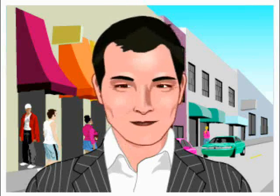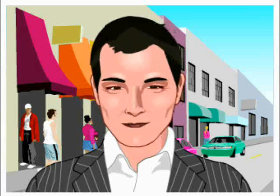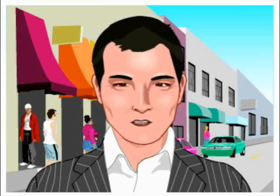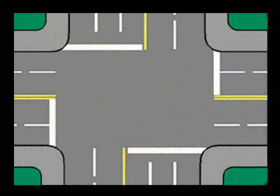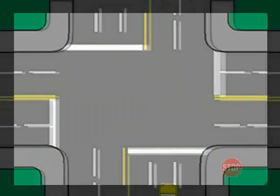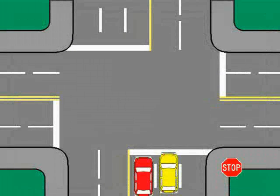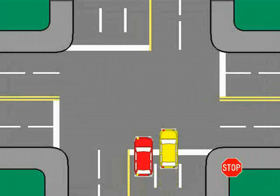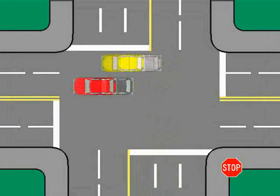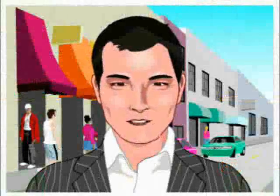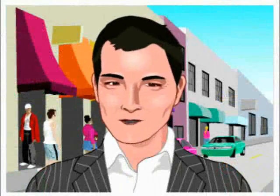Six of nine. Left turns from a two-way street to another two-way street — double left turns. Where signs or lights indicate that two lanes of traffic may turn left, you must move into one of the lanes and proceed through the intersection, completing the turn in the same lane.